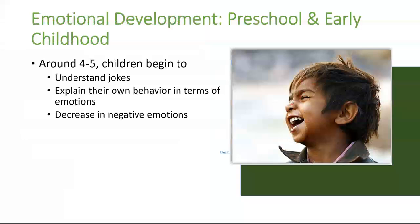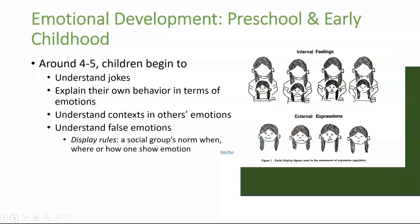Later in the preschool years and early childhood, children's emotions continue to develop and become more complex. Around three to five years, children begin to laugh at and understand jokes. They also begin to explain their own behavior in terms of emotions, such as saying things like, 'I hate her because I was angry,' or 'failing at a test makes me feel sad.' Children's understanding of others' emotions also grows in the preschool years. Not only can they distinguish between emotions like infants and toddlers can, they can also understand the role that context plays in others' emotions — that is, they understand why someone might feel angry, sad, or surprised.